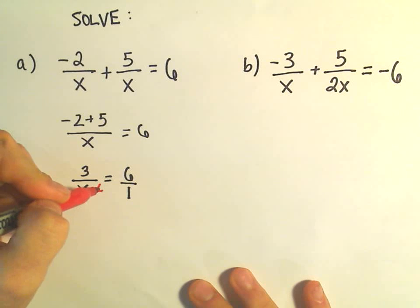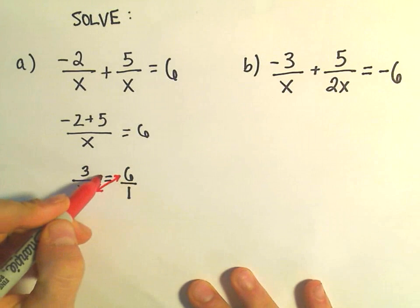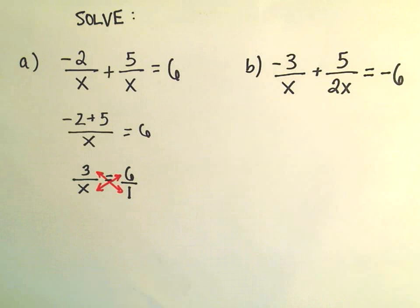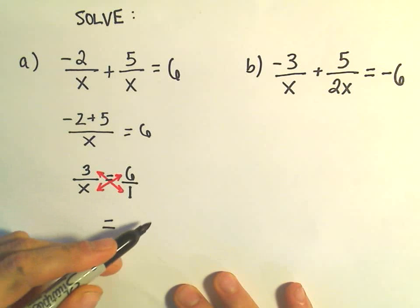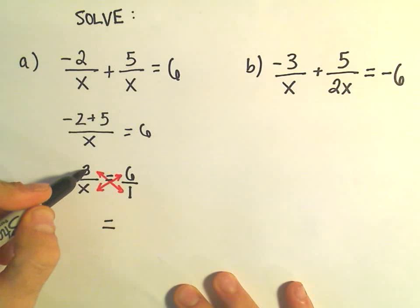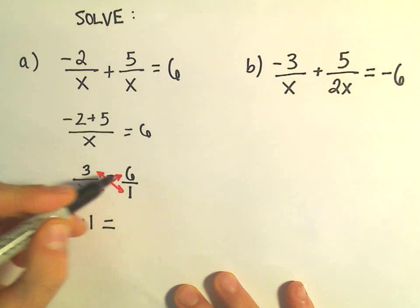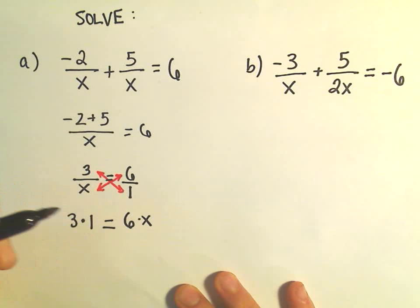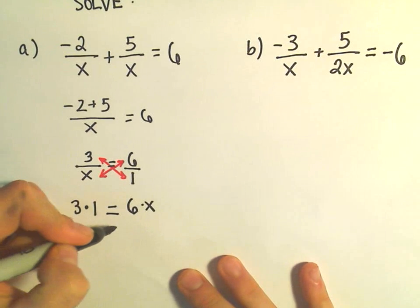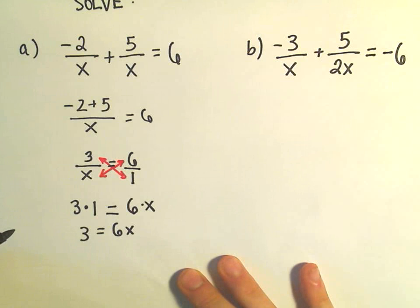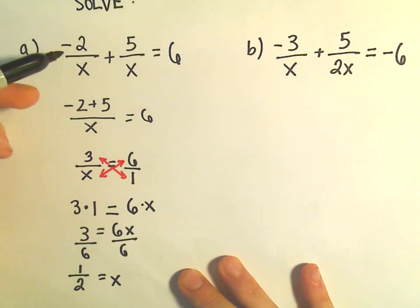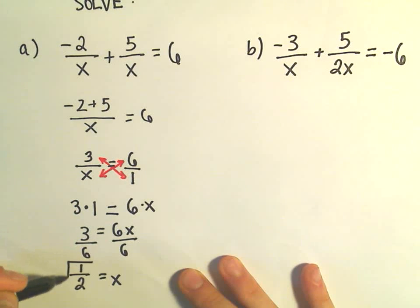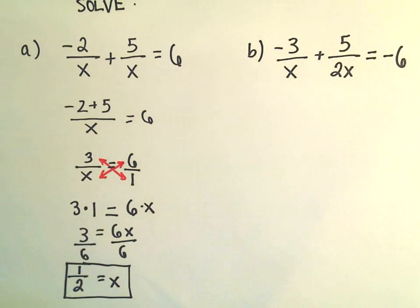When we cross multiply, we take the denominator of one fraction and multiply it by the numerator of the other and vice versa. So on one side we have 3 times 1, which is just 3 on the left side, and then x times 6, written as 6x on the right side. Now we have 3 equals 6x. Dividing both sides by 6 gives x equals one half. You can check by plugging one half back into the original — the left side gives 6.